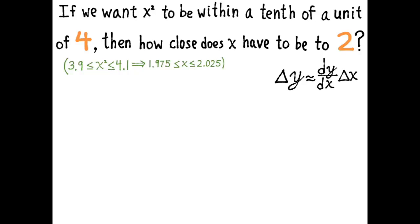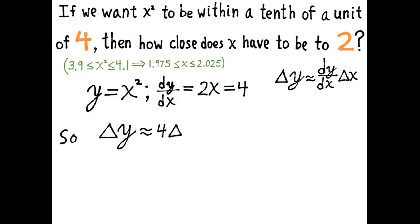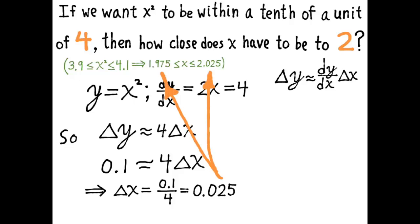Delta y is approximately dy/dx times delta x. So I need dy over dx. If y equals x squared, dy over dx is 2x, and that's equal to 4 at the value of x that we're interested in. So the relationship between delta y and delta x now is that delta y is about equal to 4 delta x. And if we want the value of delta y to be 0.1, then delta x would have to be a quarter of that, or 0.025. And that is, in fact, exactly what we found when we did it with the calculator. 0.025 below 2 to 0.025 above 2 just demonstrated that it worked.